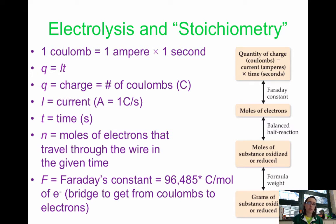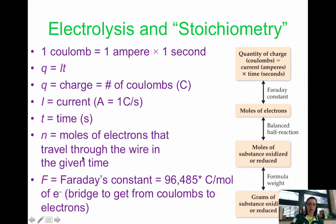Remember also that one volt equals one joule per coulomb. When looking at moles of electrons, just look at your balanced redox equation — examine your half-reactions and figure out how many electrons are being transferred from there. So when calculating the mass of a substance either produced or consumed, it's really a four-step process.